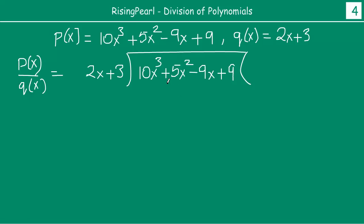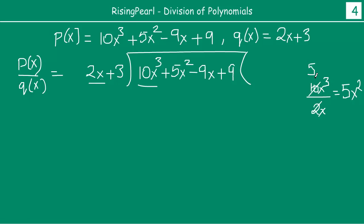The first step, after you have written in standard form, is you take the first term of your dividend and divide it by the first term of your divisor. So what we are doing is dividing 10x cubed by 2x. What you will get is — 2 fives are 10 — and x cubed divided by x, one of the x's will cancel out, you will have x squared. So this is 5x squared. So the first term is 5x squared.